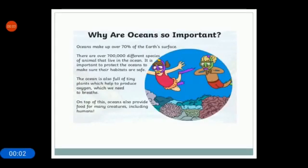Why are oceans so important? Oceans make up over 70% of the earth's surface. There are over 700,000 different species of animals that live in the ocean. It is important to protect the ocean to make sure that their habitats are safe. The ocean is also full of tiny plants which help to produce oxygen which we need to breathe. On top of this, oceans also provide food for many creatures including humans.